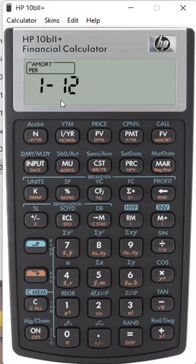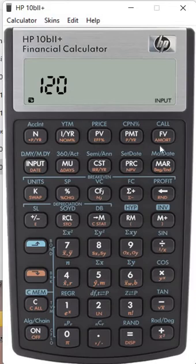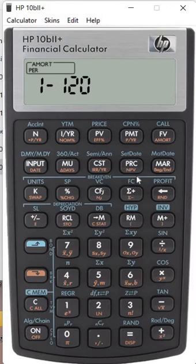Period 1 to 12. So we want to know the first 10 years. Therefore, 1 input, 120. Thereafter shift, amortization.